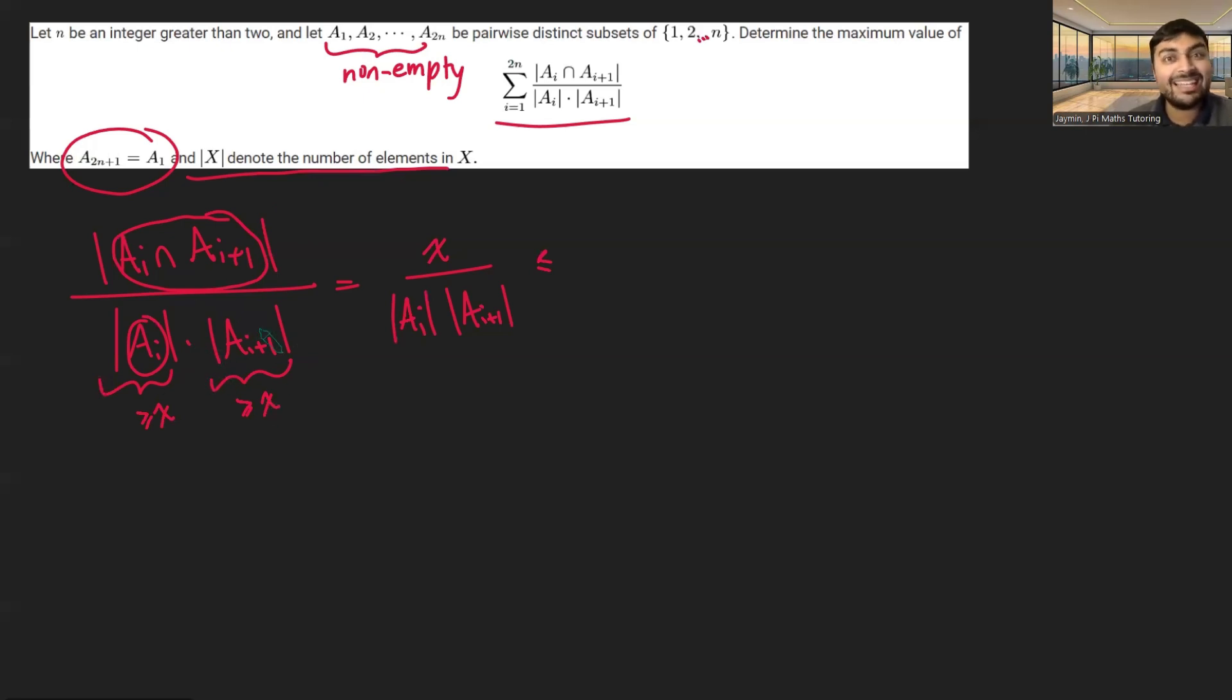So one of these sets has to be at least x plus 1. So the denominator here multiplies to at least x times x plus 1. But that's the denominator having a lower bound, which corresponds to the whole fraction having an upper bound.